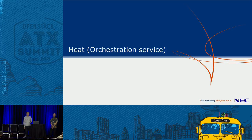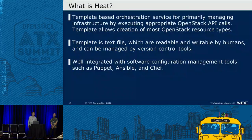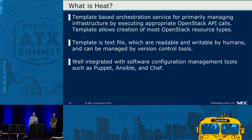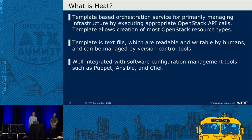Next is Heat. Heat is a template-based orchestration service for primarily managing infrastructure by executing appropriate OpenStack API calls. Templates allow creation of most OpenStack resource types. A template is a text file which is readable and writable by humans and can be managed by version control tools. Heat is well integrated with software configuration management tools such as Puppet, Ansible, and Chef.